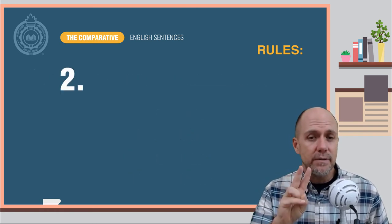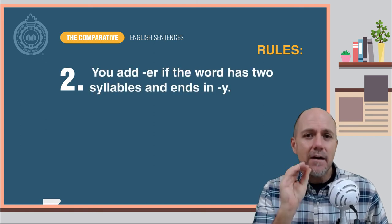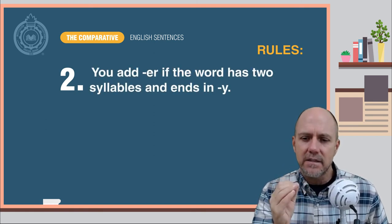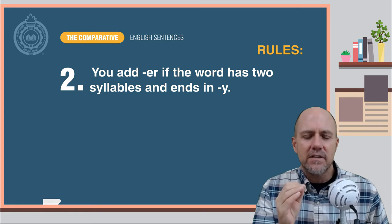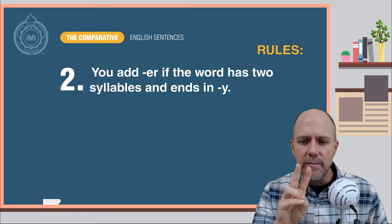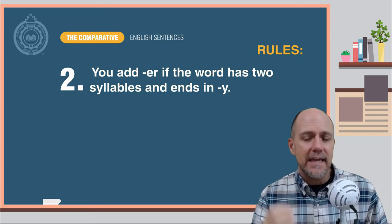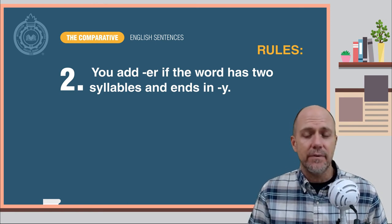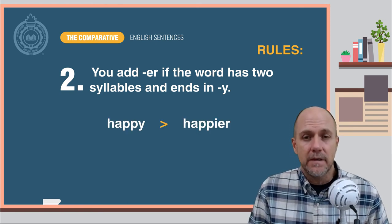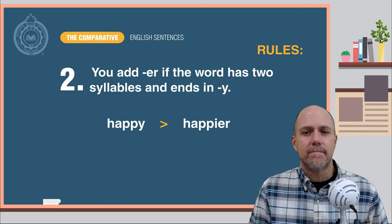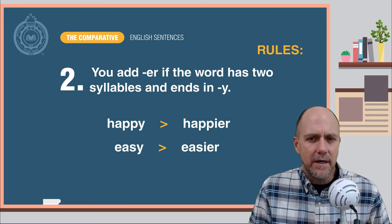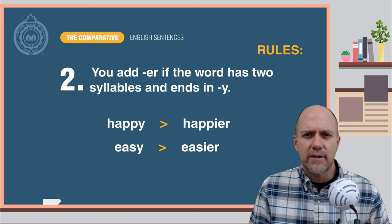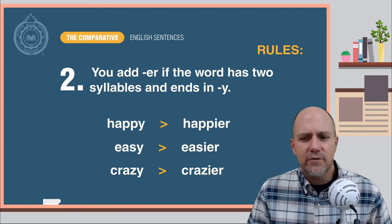Rule number two: You add -er to the adjective if the adjective has two syllables and ends in the letter y. Here are some examples: happy becomes happier, easy becomes easier, crazy becomes crazier.